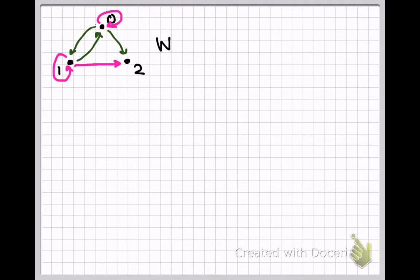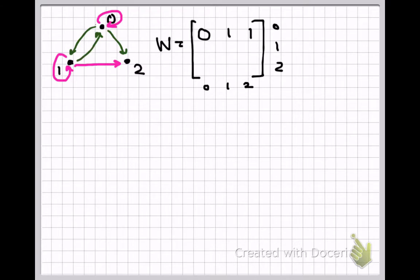In the code for Warshall's algorithm, we start by inputting the adjacency matrix for the original relation and copying that into a variable w. Here's the beginning state for w: a 3x3 matrix with the first row and column corresponding to node 0, the second corresponding to node 1, and the third corresponding to node 2.